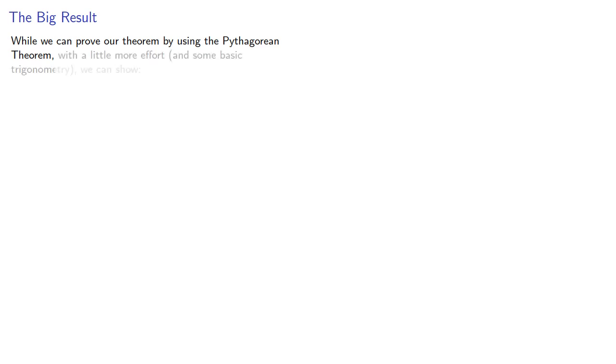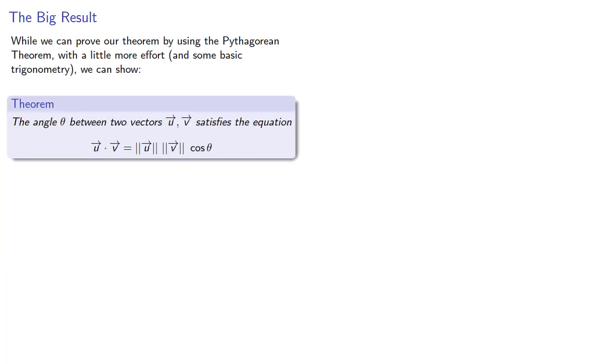With a little more effort and some basic trigonometry, we can show the following. The angle theta between two vectors u and v satisfies the equation. The dot product is the product of the norms times the cosine of the angle.